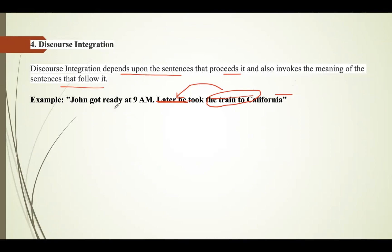For example, "John got ready at 9 AM. Later he took the train to California." Discourse integration depends on the previous sentence. In order to know who "he" is in this sentence, I need the help of the previous sentence. If I go through the previous one, I can identify that "he" refers to John. Discourse is concerned with the impact of a prior sentence on the correct sentence.